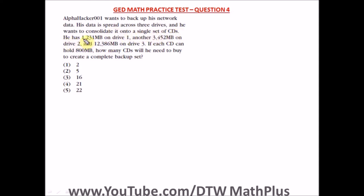He has 1,231 MB, that's megabytes, on drive 1, another 3,452 MB on drive 2, and the final one, 12,386 MB on drive 3. If each CD can hold 800 MB, how many CDs will he need to buy to create a complete backup set?